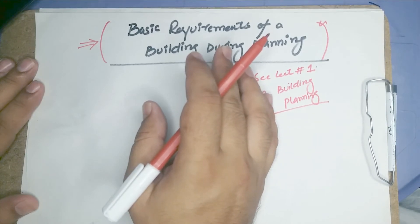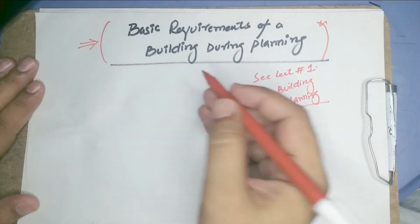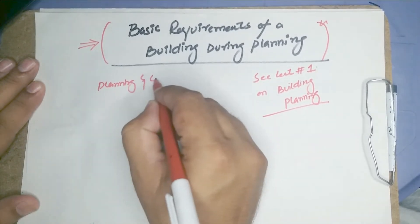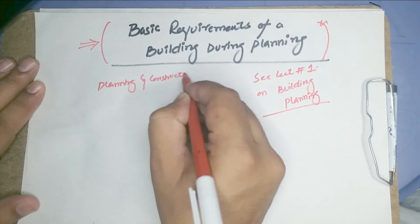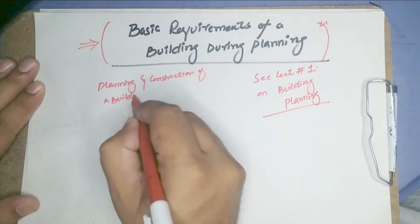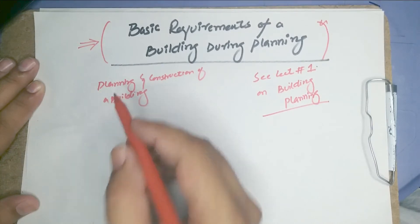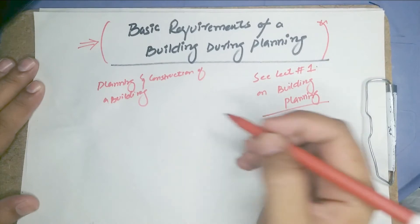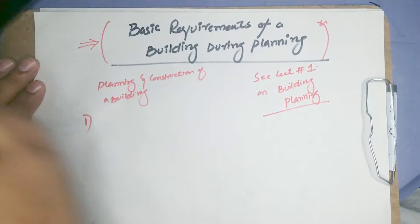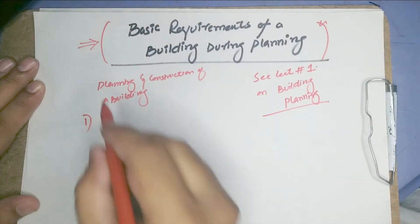Today's lecture is on the basic requirements of a building during the planning stage. In the planning and construction of a building, our aim will be to fulfill the following requirements. There are 12 requirements for planning and construction of a building.